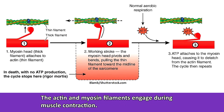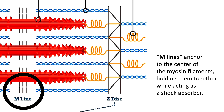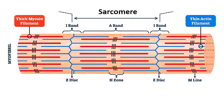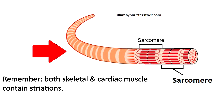The actin and myosin filaments engage during muscle contraction, which I'll discuss in just a moment. The m-lines or m-bands anchor to the center of the myosin filaments, holding them together while acting as a shock absorber. To help us understand the parts of the sarcomere, anatomists divide the sections into bands or zones. The arrangement of filaments within these bands accounts for the striated or striped appearance of the skeletal muscle fibers, and that's an important characteristic about skeletal and cardiac muscle tissue — they both contain striations.